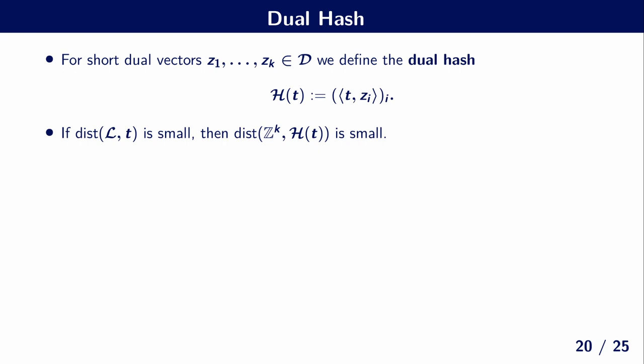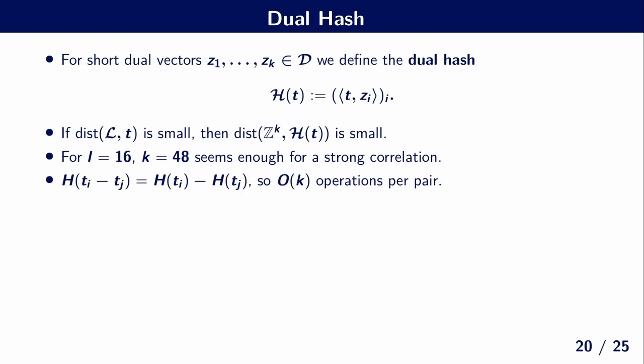Now note, to compute the first, we need the Babai lifting, which is quadratic in the dimension. For the second part, it's clearly linear in this case, if we have already pre-computed the dual hash. But we don't apply this to the full dimension, we only apply this to a smaller lifting dimension of, say, 16. And then just using 32 or 48 dual vectors seems enough for a very strong correlation. And note that we can efficiently compute this dual hash of the difference of two targets, because this function is linear. And last but not least, this is very suitable for GPUs. While the Babai lifting is very serial in computation, this can be easily parallelized.